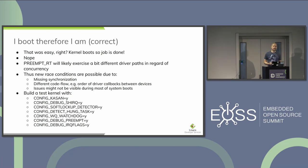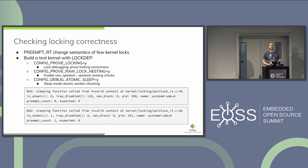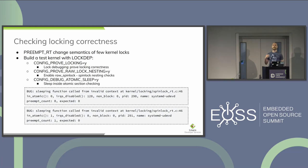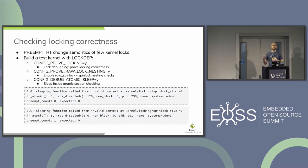How to debug these issues? We have quite a few tools: KSAN, debugging of IRQ flags, debugging of shared IRQs, and lockup task detectors. An important aspect of PREEMPT_RT is that it changes the semantics of a few kernel locks. We can automatically debug locking to check correctness — options include proving locking correctness, checking raw spinlocks for proper nesting, and verifying there is no sleeping during atomic sections.